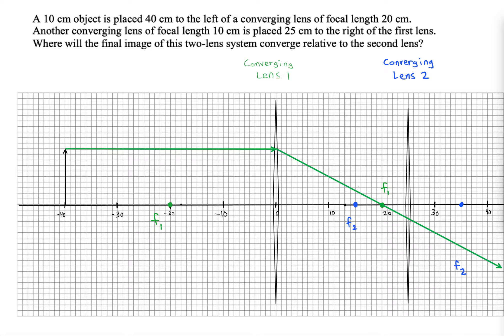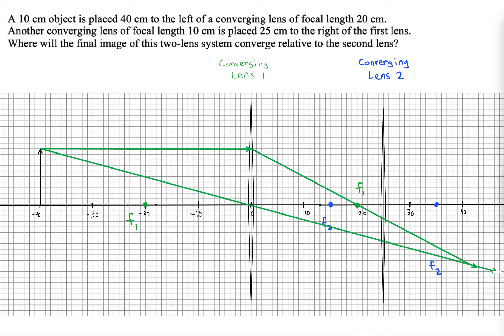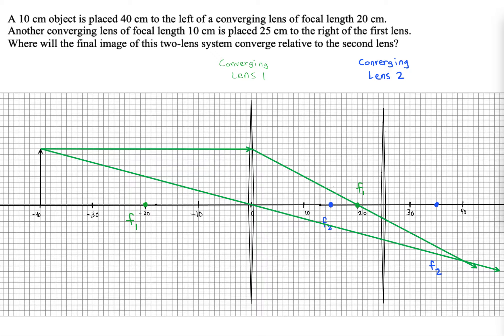We'll have another ray. It goes from the tip of the object through the center of lens 1. That looks pretty good. That's all we really need for constructing our first image.